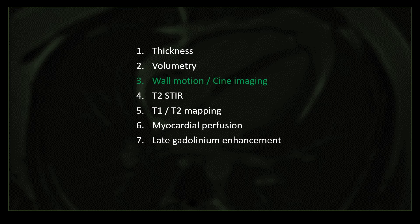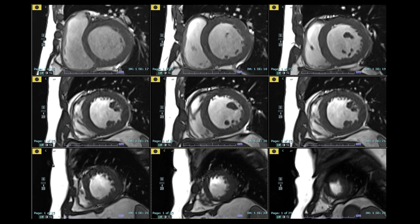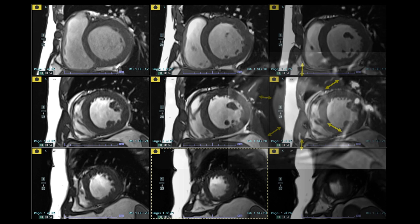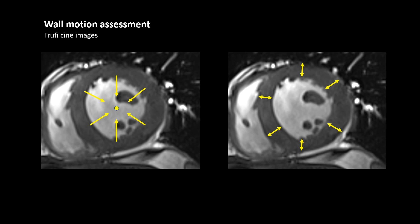Now let's see how to assess wall motion on cine images. You should arrange all the images in a sequence going from the base — once you start seeing the papillary muscles, that is the mid cavity. So we have the base, mid cavity, apical cavity, and then the last section is the apex. One method is to keep your cursor in the middle and see how close each segment comes toward the cursor. If there is any wall motion abnormality, that segment won't come as near to the cursor as the other segments.